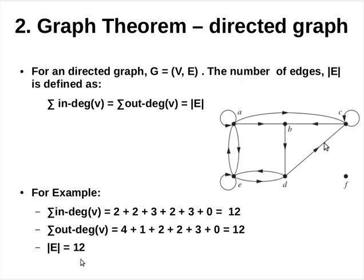Theorem 3.2 is associated with directed graphs. It states that the summation of in-degrees of all vertices in graph G is equal to the summation of out-degrees of all vertices in graph G, which in turn is equal to the number of edges in graph G. In the given graph G, the summation of in-degrees of all vertices is equal to 12, the summation of out-degrees of all vertices is also equal to 12, and the number of edges is equal to 12, so all three values are equal.